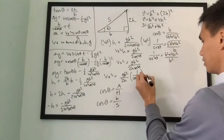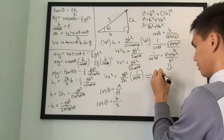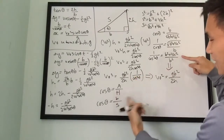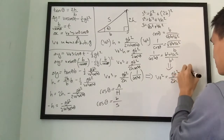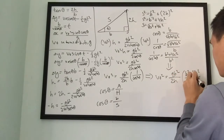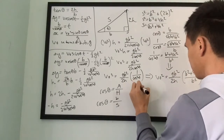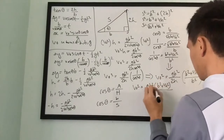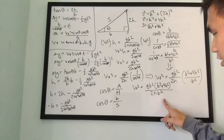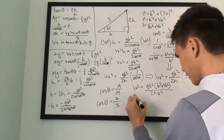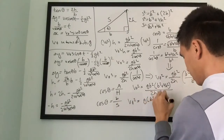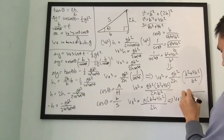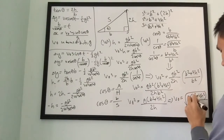Plugging that in: v-naught² equals g·b² over 2h multiplied by (b² + 4h²) over b². Multiplying this out: v-naught² equals 2g·b²·(b² + 4h²) over 2h·b². There's a b² in the numerator and denominator, so those cancel. Taking the square root of both sides, v-naught equals the square root of g·(b² + 4h²) over 2h.